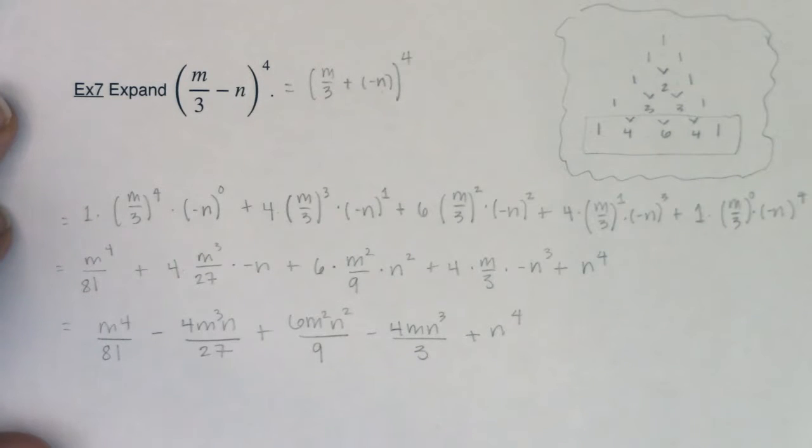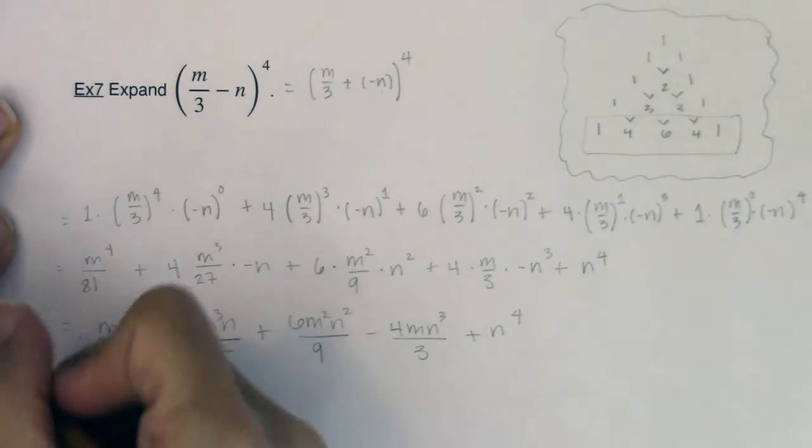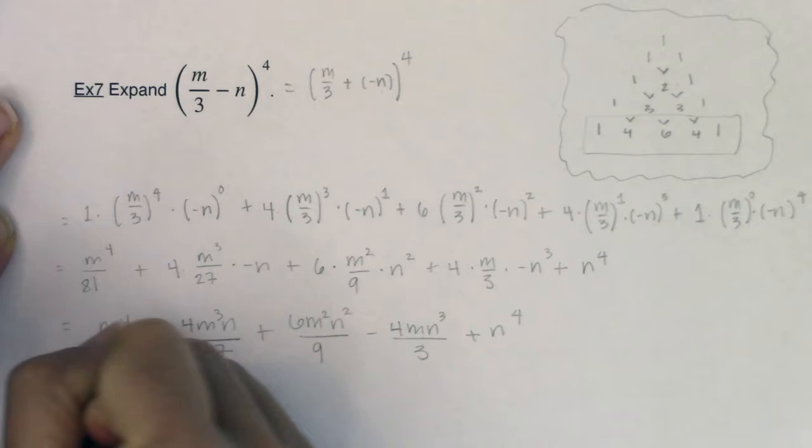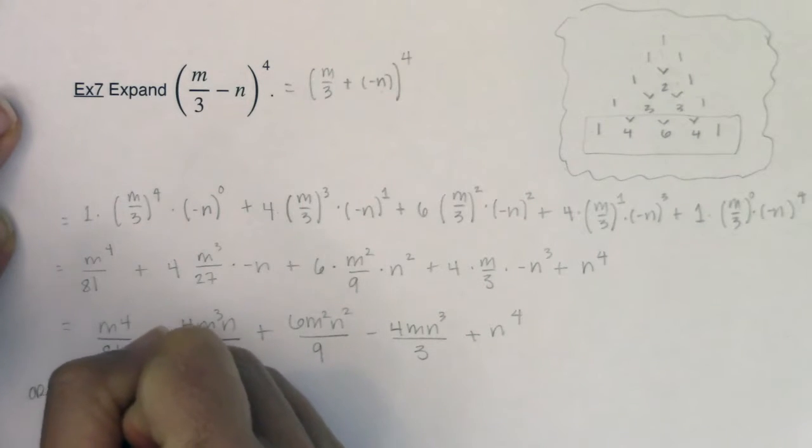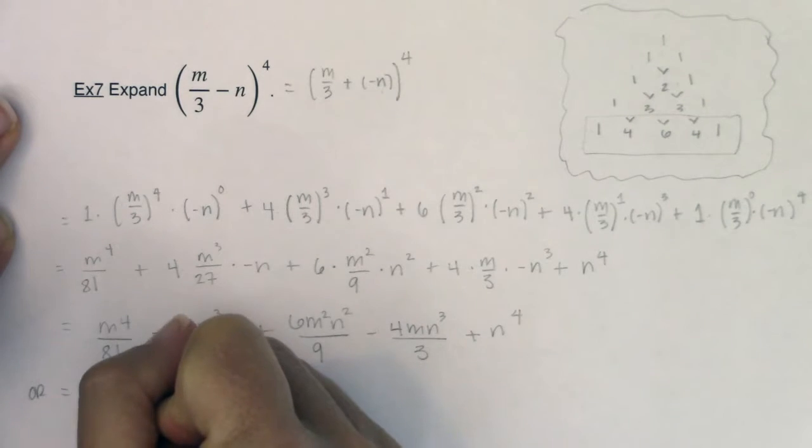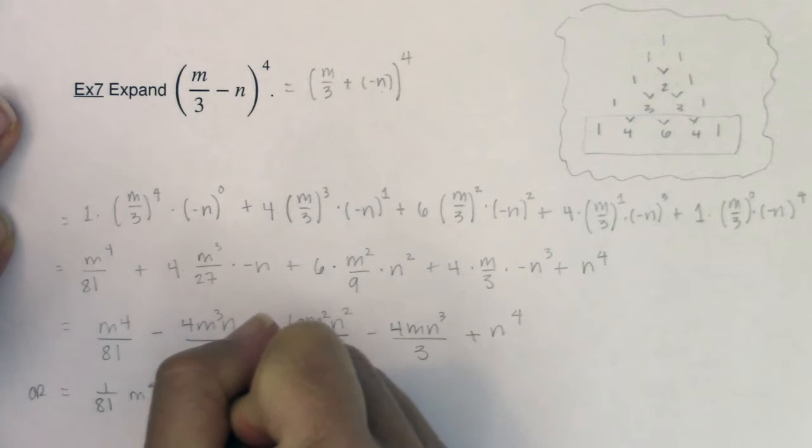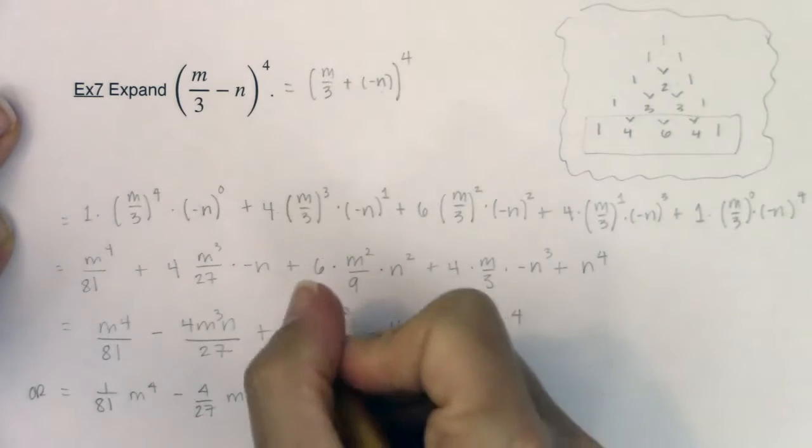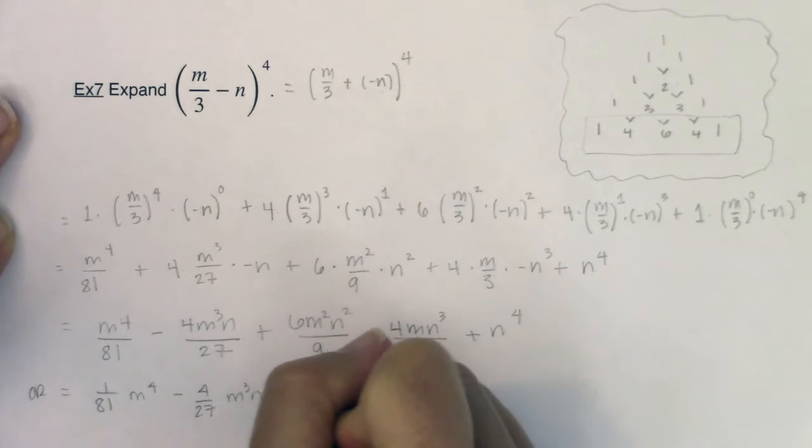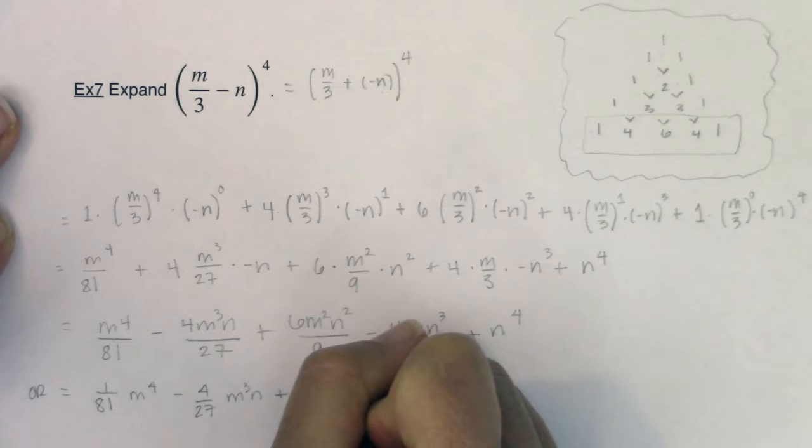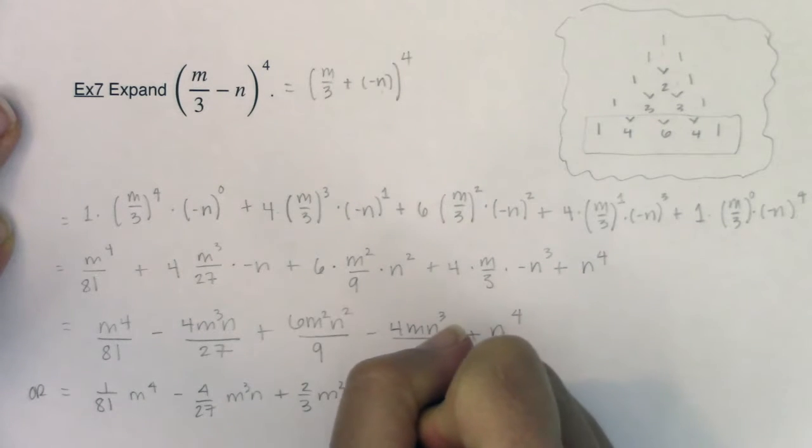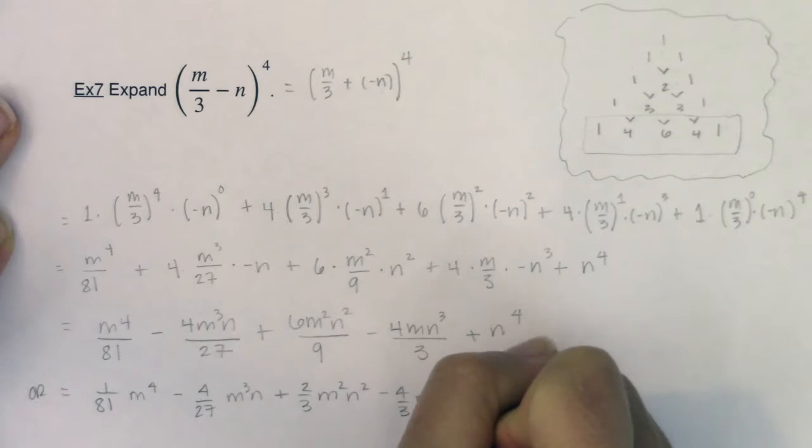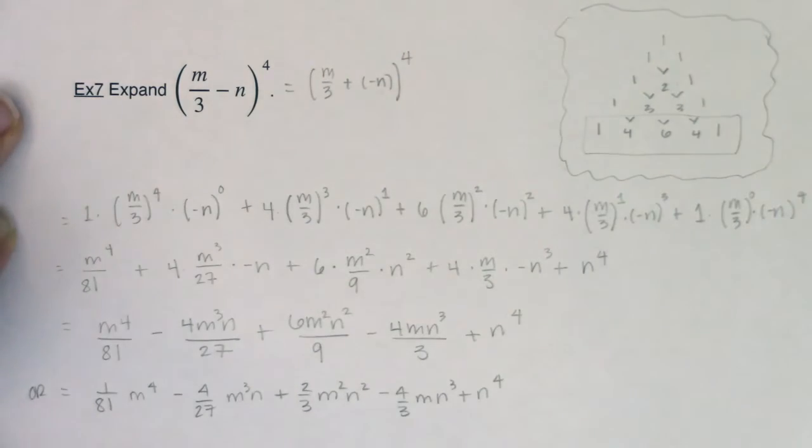Okay, so that's one way to write it. I'm just going to put a little or. If you want, you can pull the coefficients out in front, you can say this is 1 over 81 times m to the fourth minus 4 27th m cubed n. Here are 6 9ths. I can actually simplify that to 2 3rds m squared n squared minus 4 3rds m n cubed plus n to the fourth.